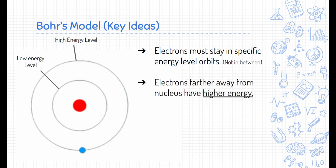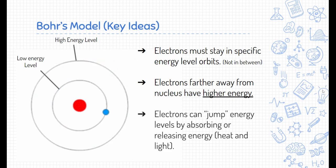Electrons on the farther away orbits, the ones farther away from the nucleus, have higher energy than the ones closest to the nucleus. He did say that electrons could jump energy levels and they do this by either absorbing or releasing energy. You can kind of see that here with a little squiggly green line.